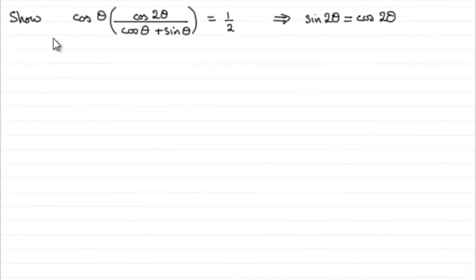We've got to show that if this equation equals a half, it follows that sin 2θ equals cos 2θ. So how are we going to do that?